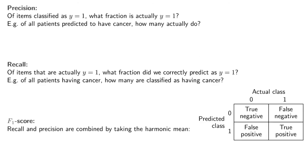Let's pretend we're building a cancer classification system - a system that takes some input and classifies whether a patient has cancer or not. We have validation data where we know the actual labels, and we pass all of that data through our classifier keeping track of true negatives, false negatives, false positives, and true positives. The first metric is precision. The question is: of the items classified as positive, what fraction is actually positive? For our cancer example: of the patients predicted to have cancer, how many actually do?